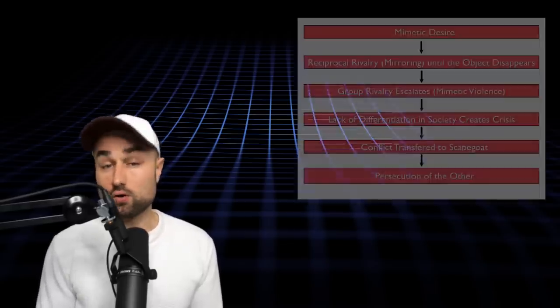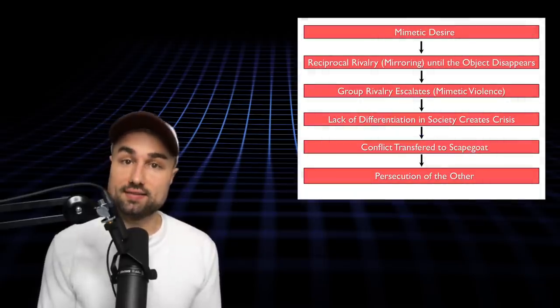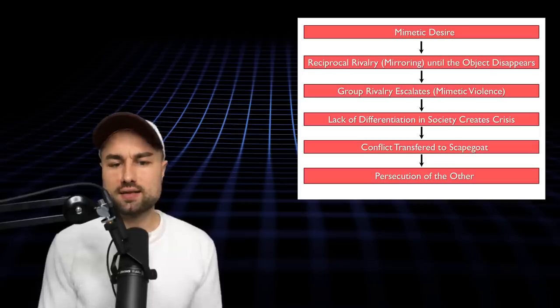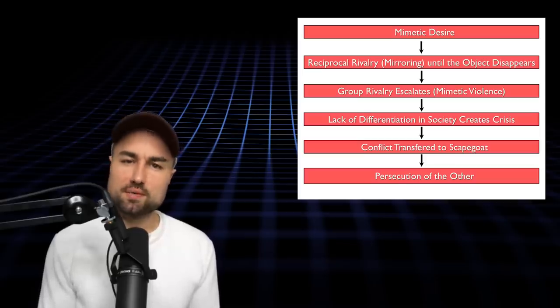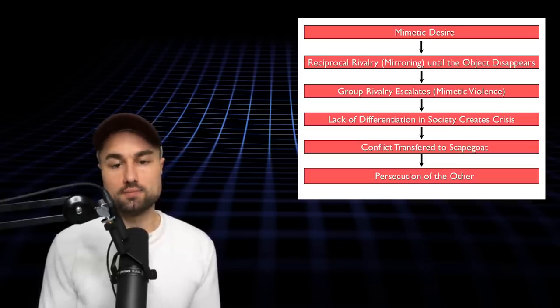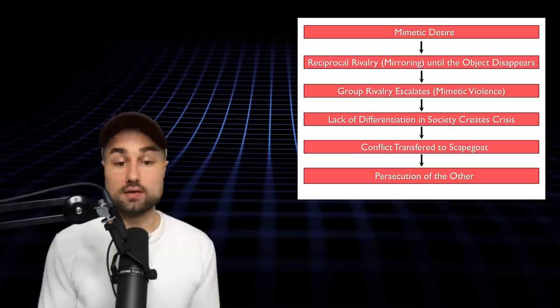Now, scapegoating also operates in individuals at the level of identity. We all construct identities over against someone or something else. I am a woman, not a man. I'm a liberal, not a conservative. I'm an atheist, not a believer.